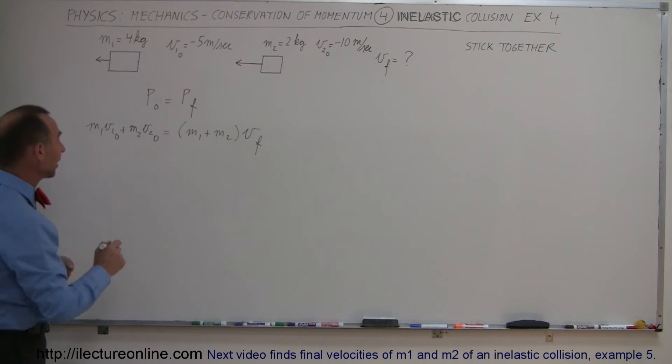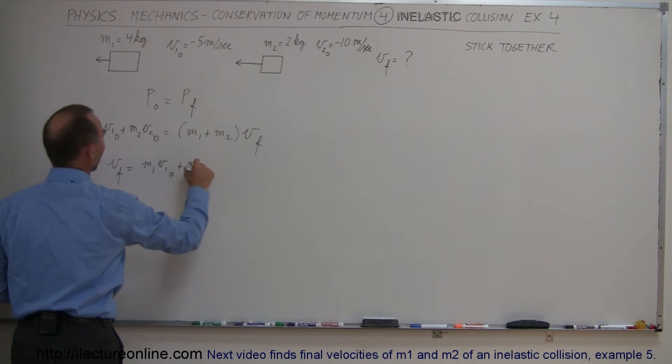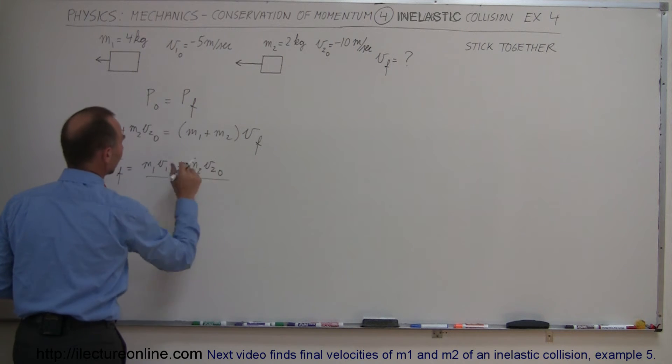Again we're looking for v final so let's solve that for v final. v final is equal to the left side of the equation which is m1 v1 initial plus m2 v2 initial divided by the coefficient in front of v final which is m1 plus m2.